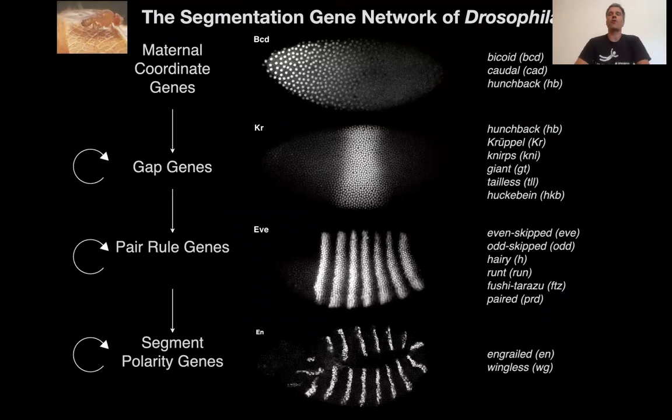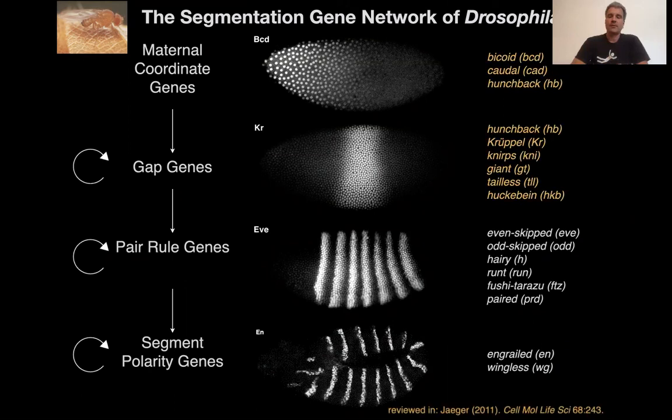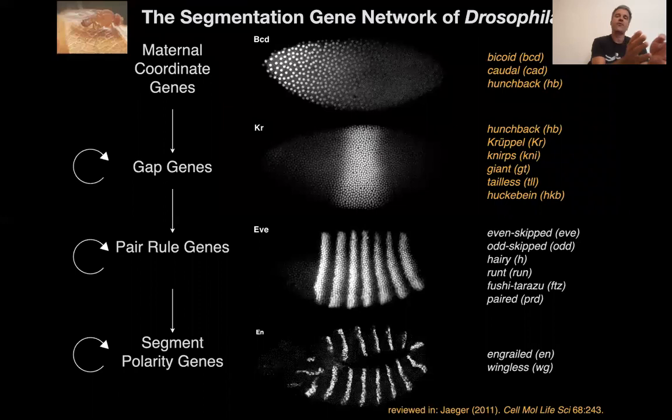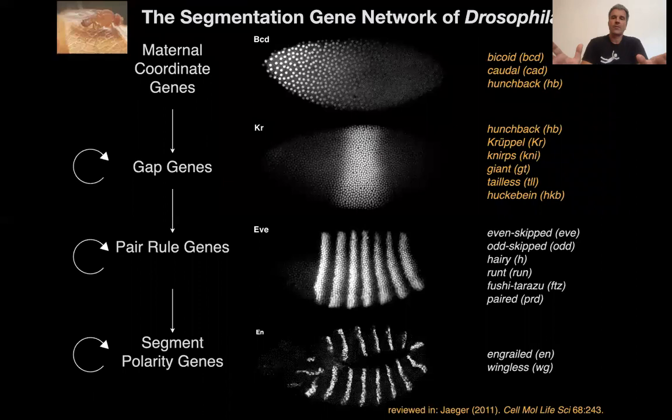In the first lecture I also introduced the segmentation gene network of Drosophila already, so if you're not familiar with this system please go back and watch that lecture. We're going to focus in particular on this first step of the cascade where maternal long-range transcription factor gradients drive the expression of broad overlapping domains of gap genes, and these combinations of gap genes that are expressed form different territories of gene expression. Historically this is seen as a classical French flag problem.